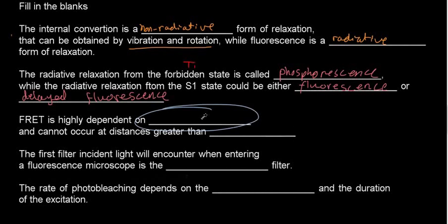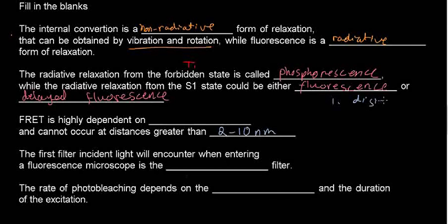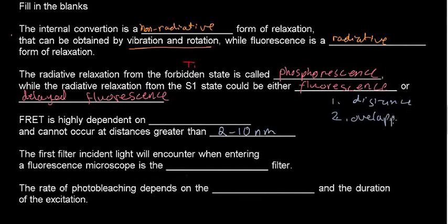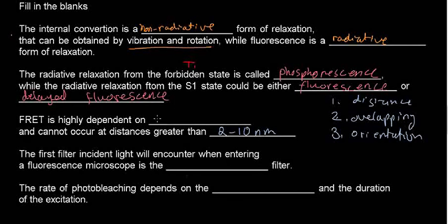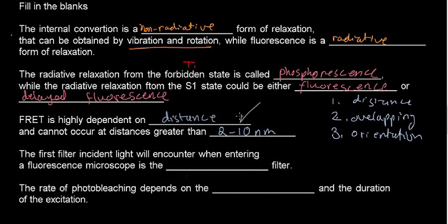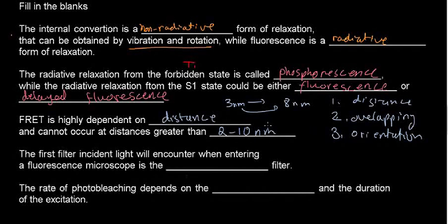FRET is highly dependent on something and cannot occur at distances greater than a certain range — which we need to know is 2 to 10 nanometers. FRET depends on distance, on the overlap of the emission spectrum of the donor and the absorption spectrum of the acceptor, and on proper orientation. Most critically, it depends on distance to the inverse sixth power. So FRET is highly distance-dependent — even within range, going from 3 nm to 8 nm drops efficiency dramatically.